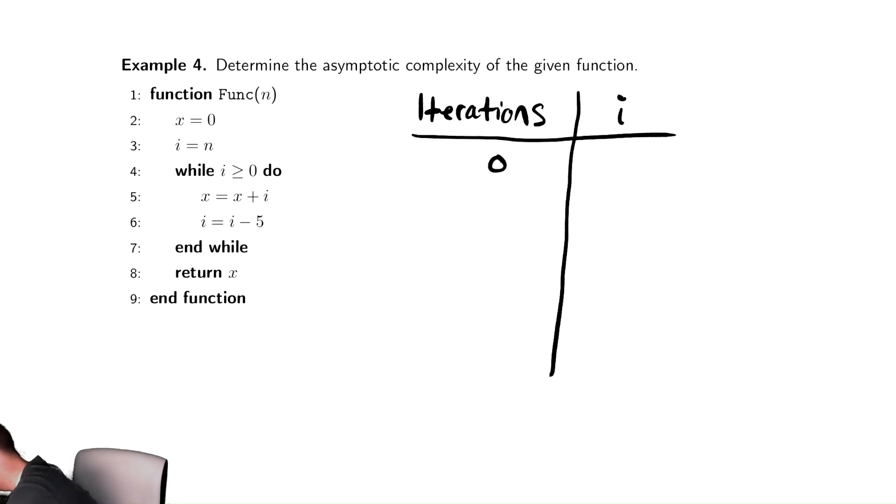Before we start, i started at n. And then after we finish one iteration, we have subtracted 5 from i according to our code. And then after two iterations, we subtract 5 again, so that's n minus 10. After three iterations, we subtract 5 again. Therefore, after k iterations, that's looking a lot like n minus 5 times k.